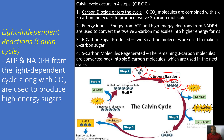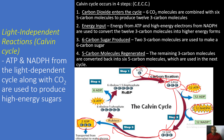Step two is energy input: energy from ATP and high-energy electrons from NADPH are used to convert the twelve three-carbon molecules into high-energy forms. Step three: two three-carbon molecules are used to make a six-carbon sugar — that six-carbon sugar is glucose. Step four: the remaining three-carbon molecules are converted back into six five-carbon molecules, which are used in the next cycle, and the process starts all over again.